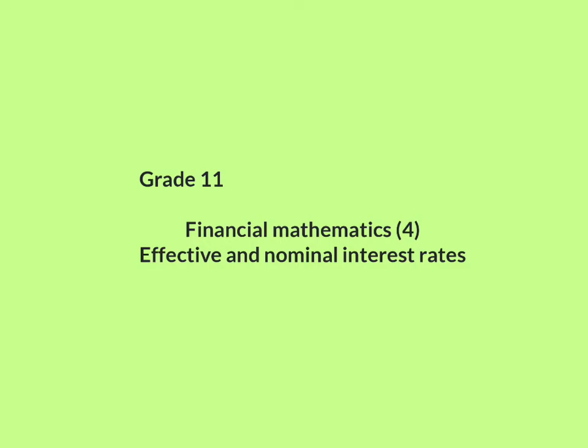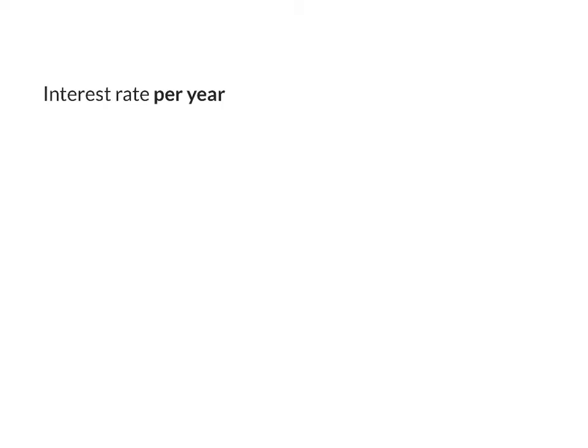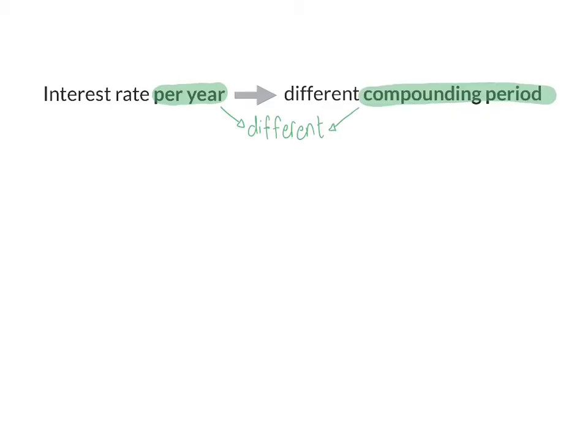In this lesson, we are going to have a look at the difference between the effective and nominal interest rate. An interest rate is usually given as a rate per year, but that annual interest rate can be compounded in many different ways — it can have different compounding periods. When the period the interest rate is based on and the compounding period differ, it is called a nominal interest rate.